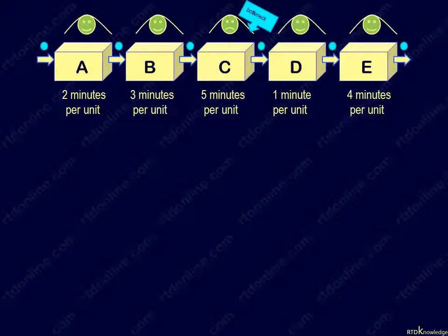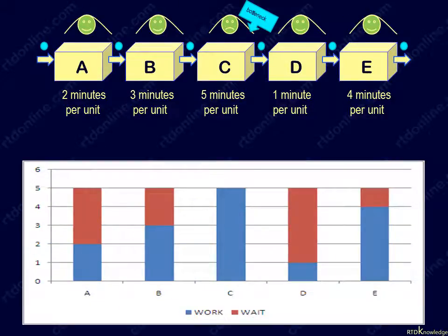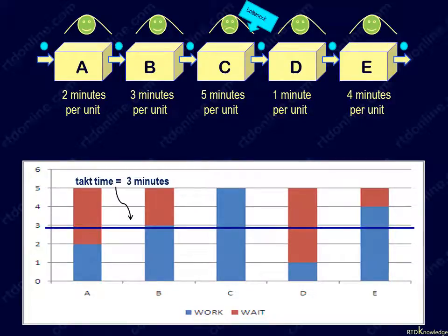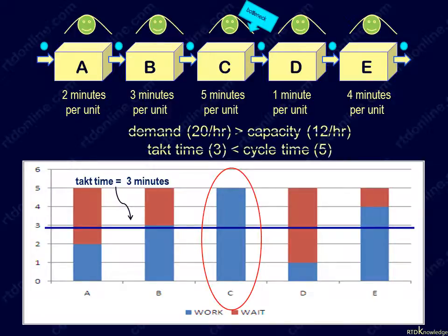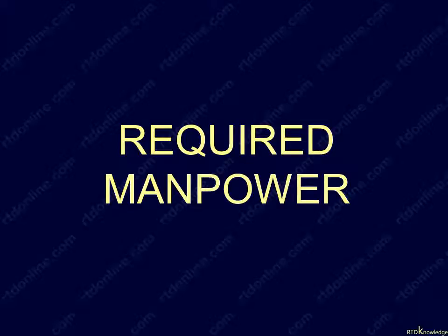Let's now apply this TAC time to our original process. As you can see in this slide, the process cycle time or bottleneck cycle time of 5 minutes is longer than the 3-minute TAC time. This means our process, as it is, can't meet the demand rate of 20 units per hour — its capacity is just 12 units per hour. To meet the TAC time, you may have to adjust your manpower and balance the line.